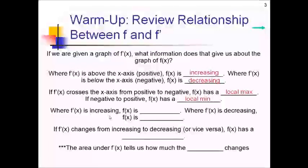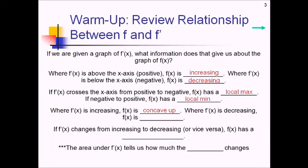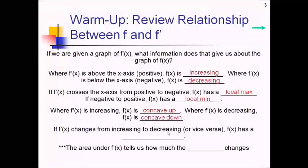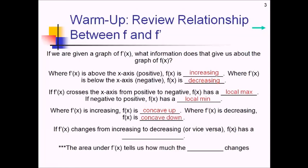If f prime is increasing, f is going to be concave up, because if f prime is increasing, f double prime is positive, so the original function has to be concave up. And where f prime is decreasing — when your slope is going down — then f itself is concave down. If f prime changes from increasing to decreasing or vice versa, then the original has a point of inflection, because this is a sign change in f double prime.